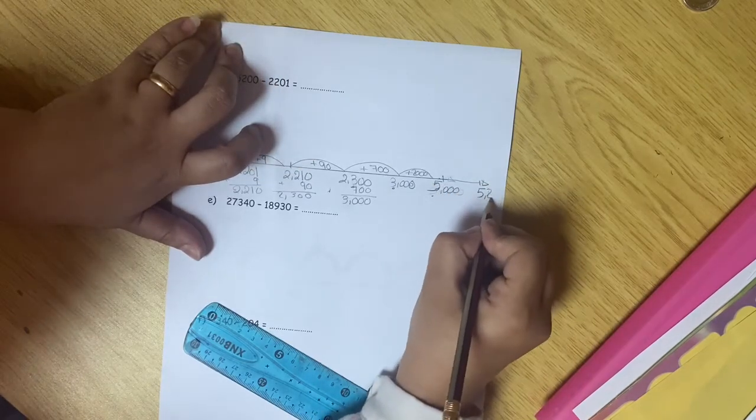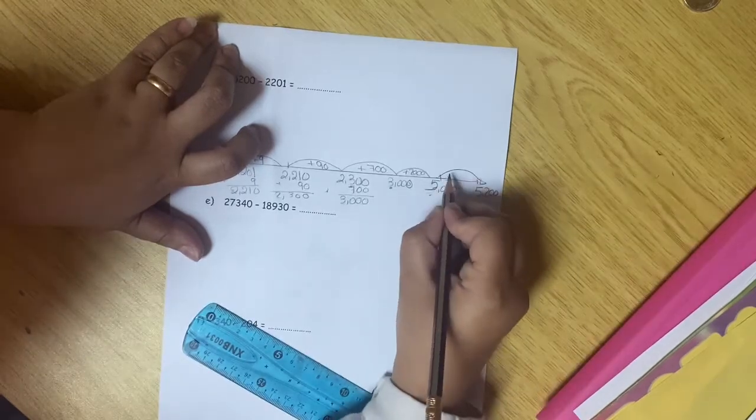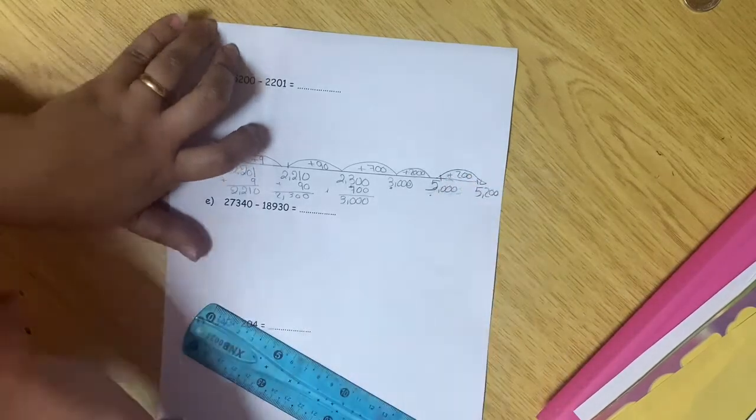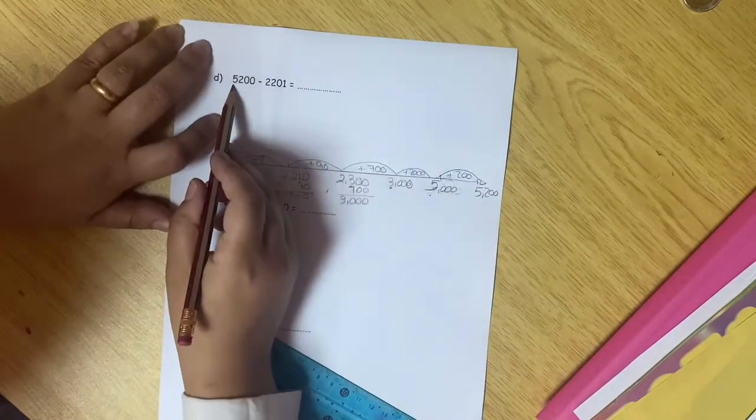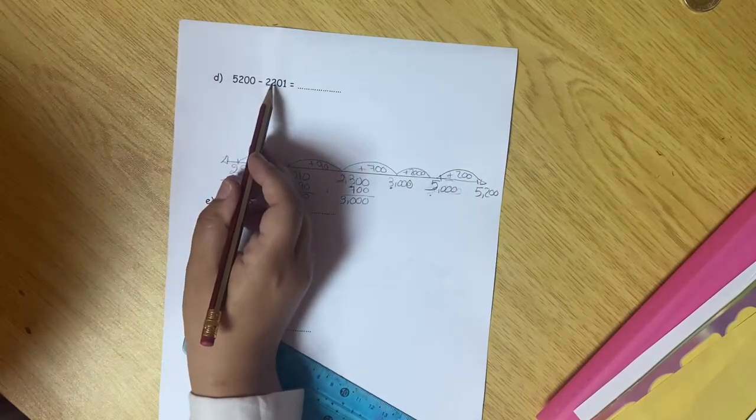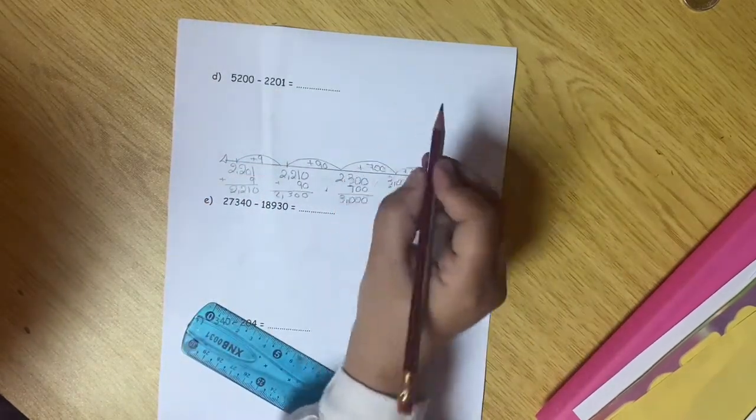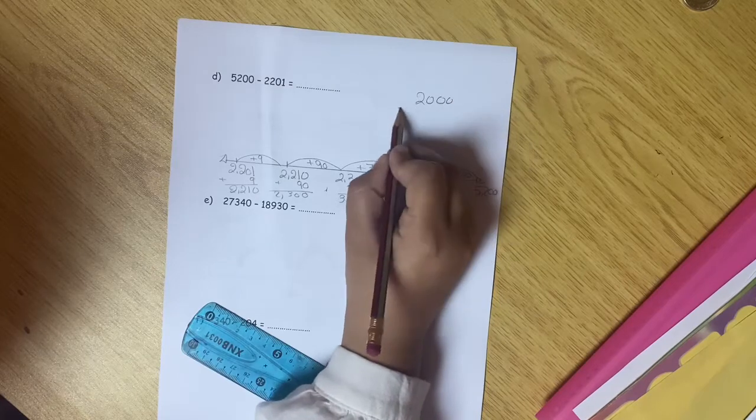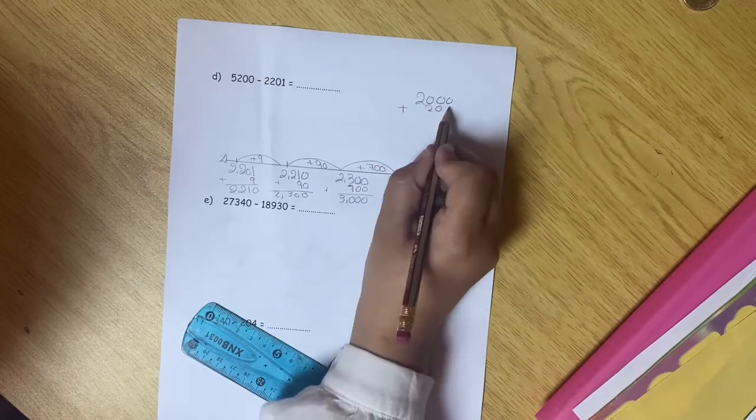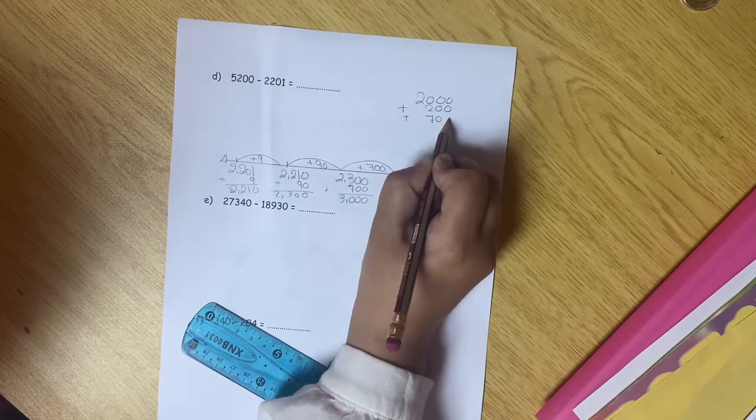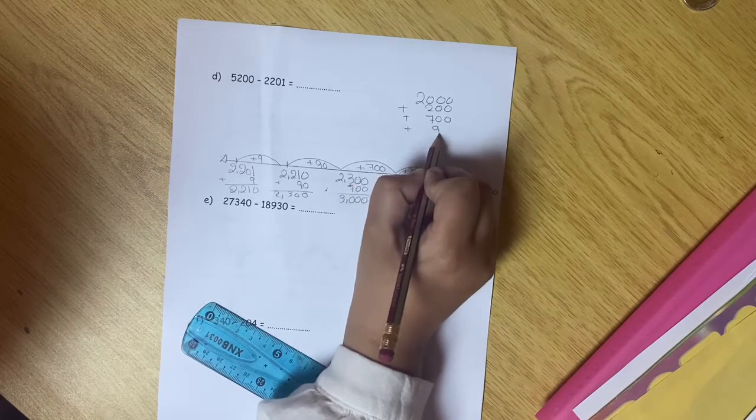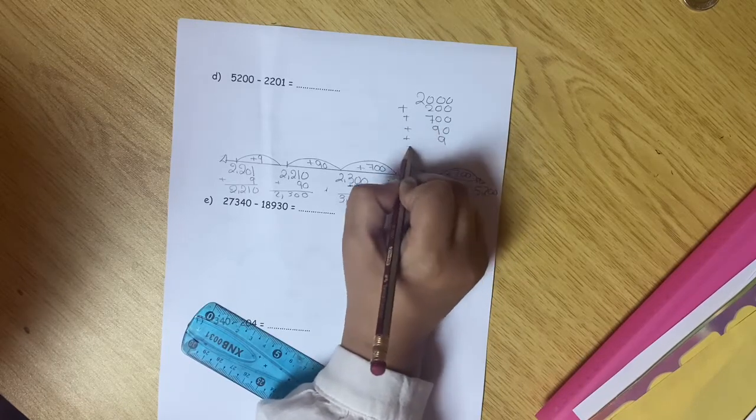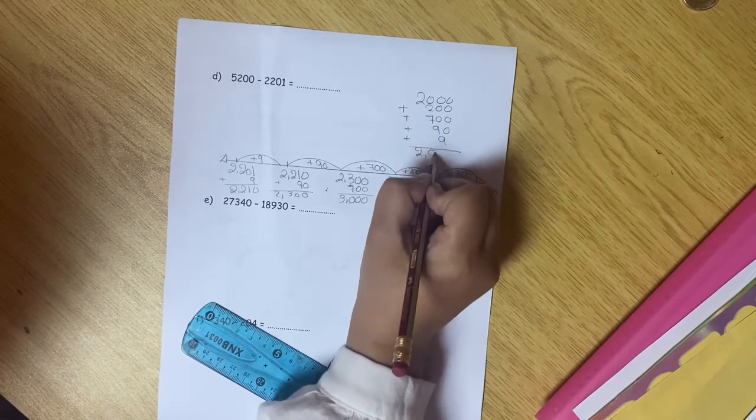At the end, I want to reach 5,200, so I will do plus 200. So at the end, 5,200 minus 2,201 will be 2,000 plus 200, plus 700, plus 90, plus 9. So the answer will be 2,999.